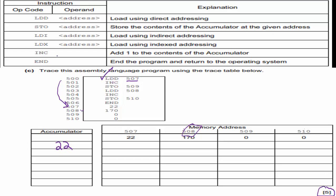Next is INC: add one to the contents of the accumulator. The accumulator currently holds 22, so I add one and get 23 — the accumulator is incremented. Then we have STO, which stores the contents of the accumulator at the given address. We are not storing the value 509; we are taking the accumulator value and putting it into address 509. So 23 goes right there, and I have stored the value 23 into address 509.